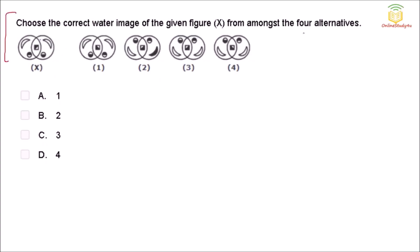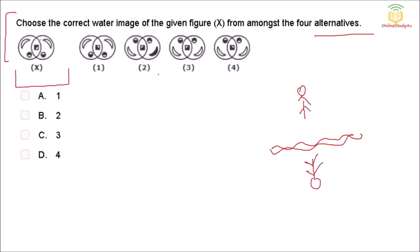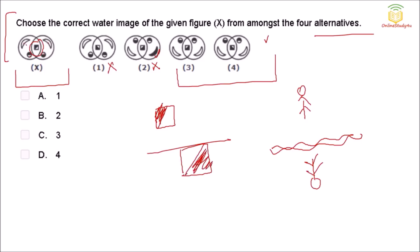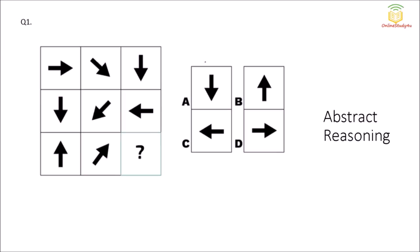Choose the correct water image of the given figure from the four alternatives. Water image means: if you stand in front of water you look flipped (ULTA). In water, the top part comes down. Option 1: not come down — wrong. Option 2: come down but black — wrong. Options 3 and 4 remain. The dark goes up and white comes down — same in both. But this part flipped will be exactly ULTA (mirrored), so option 3 is the water image.